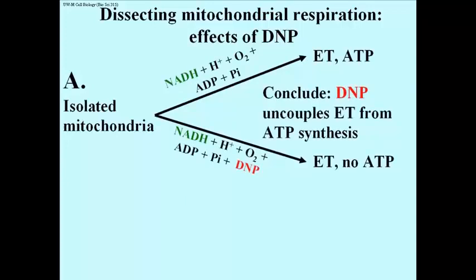Mitochondria treated with dinitrophenol, while still able to oxidize the reduced electron carriers and consume oxygen, would not make ATP.